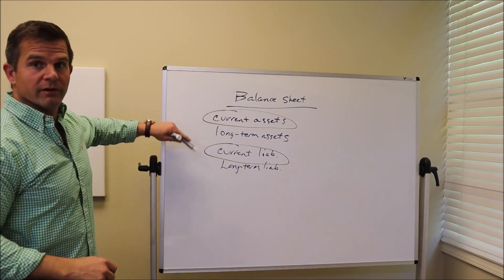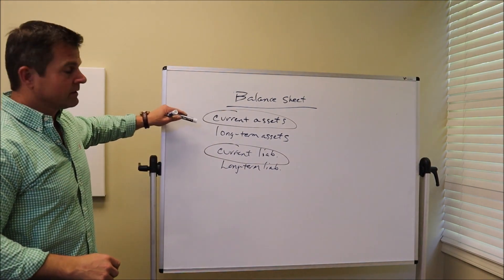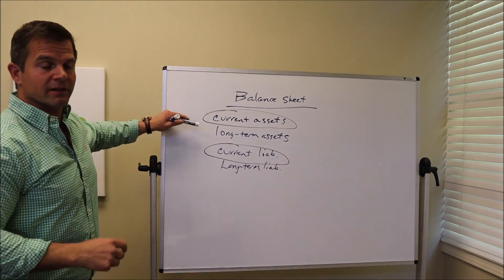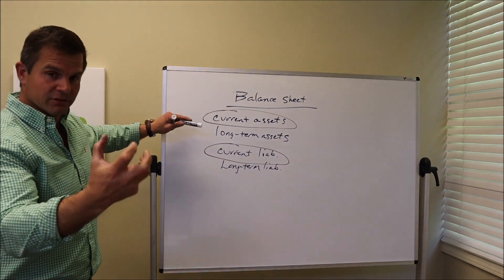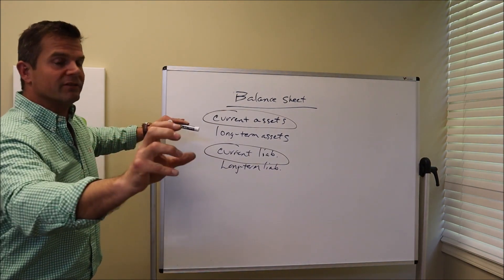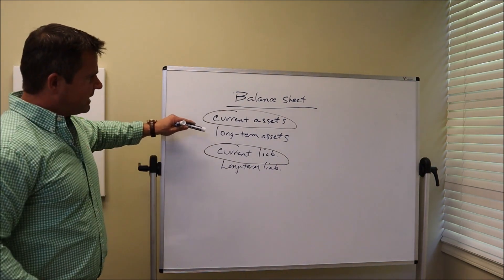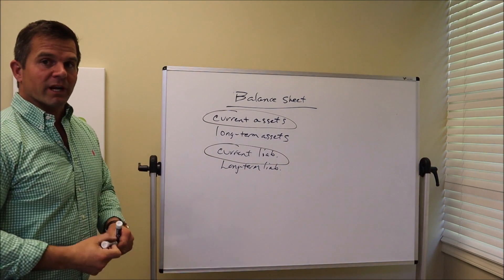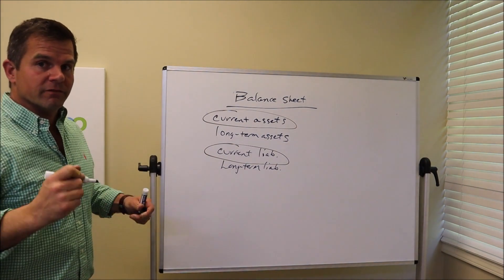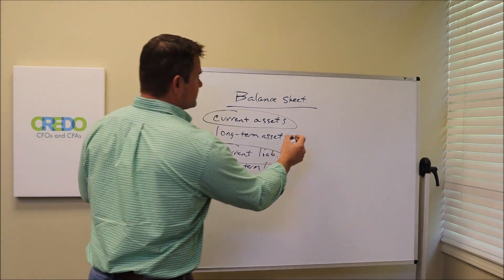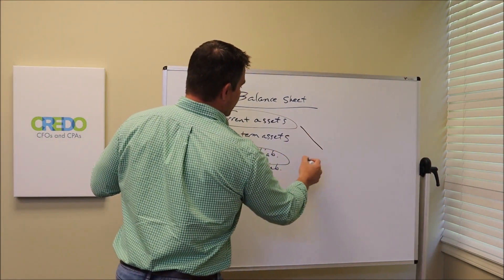The balance sheet is ordered by liquidity — how fast these things are going to either convert into cash or we have to pay out cash. Now there's a very key ratio that's very important when you're looking at your business, and it's called working capital.